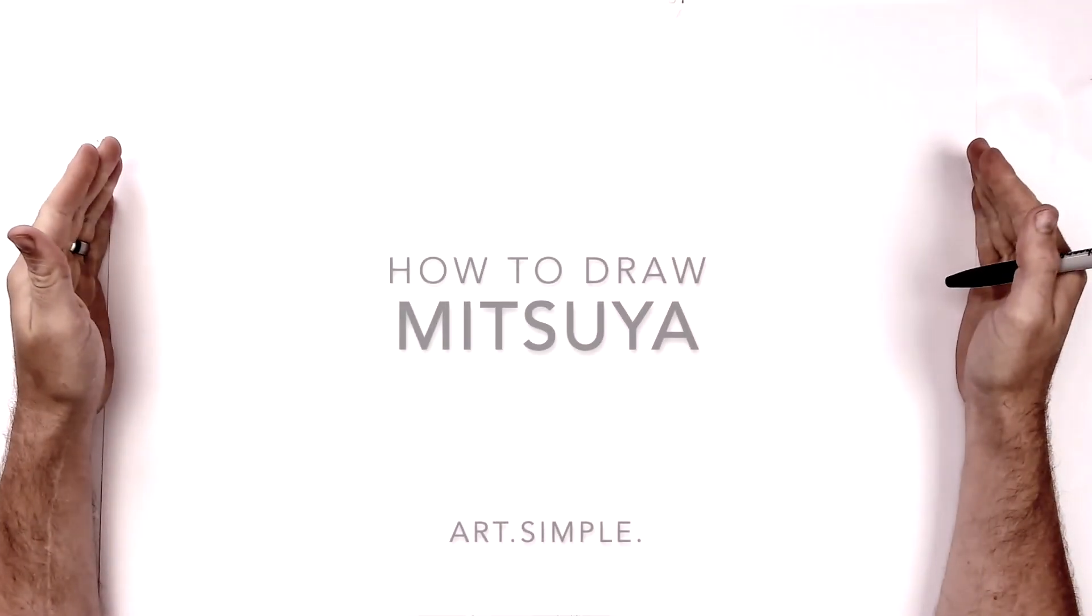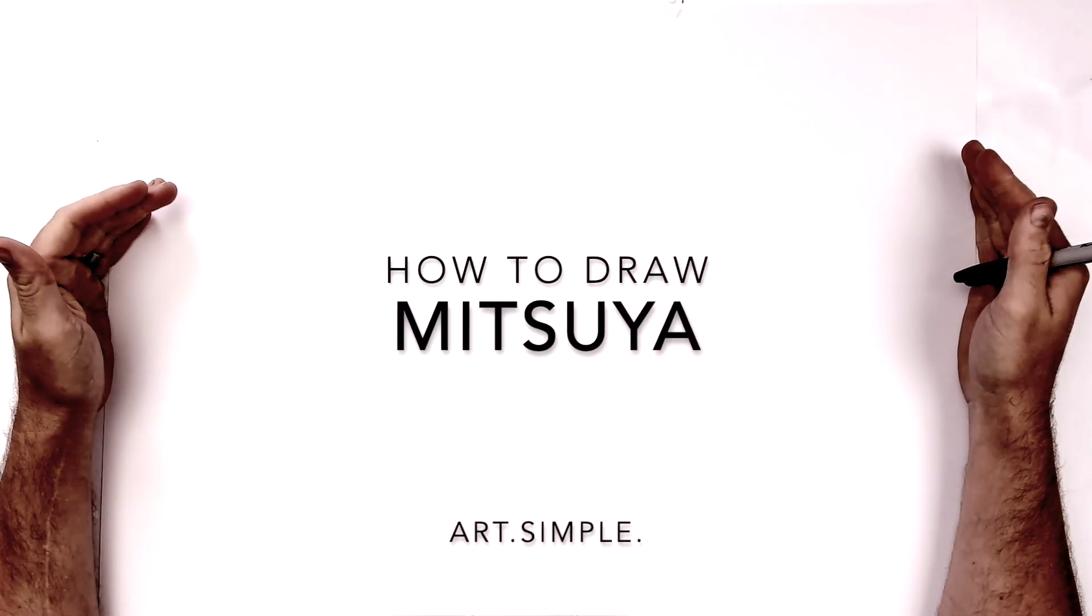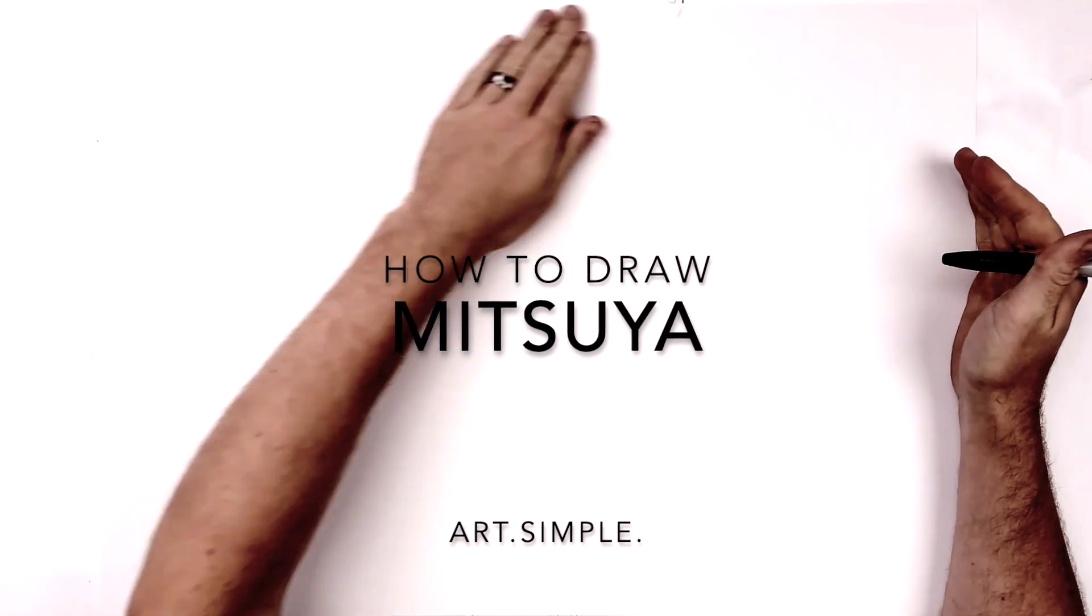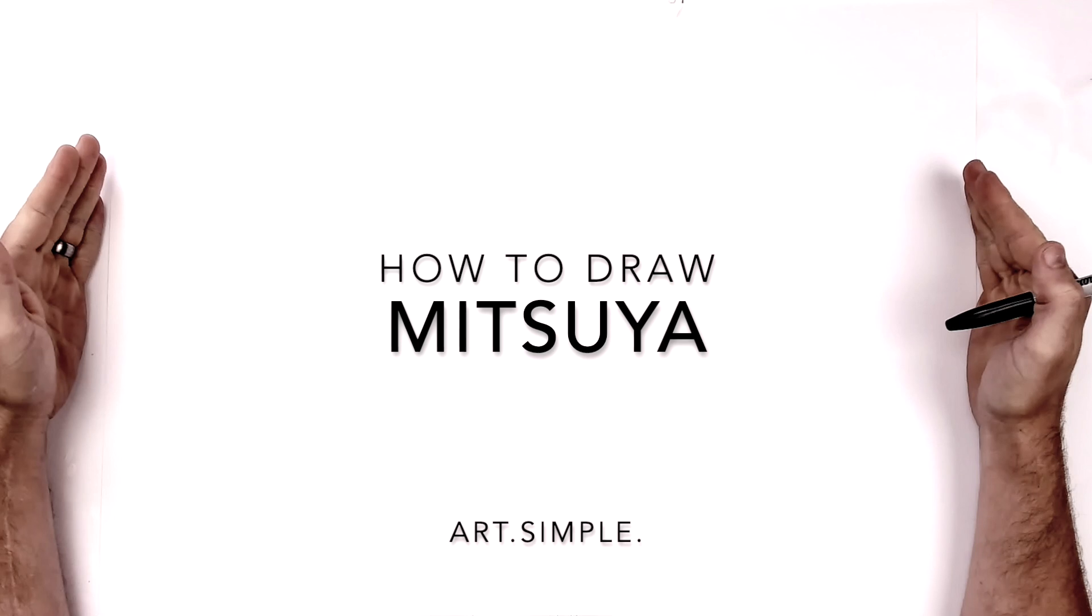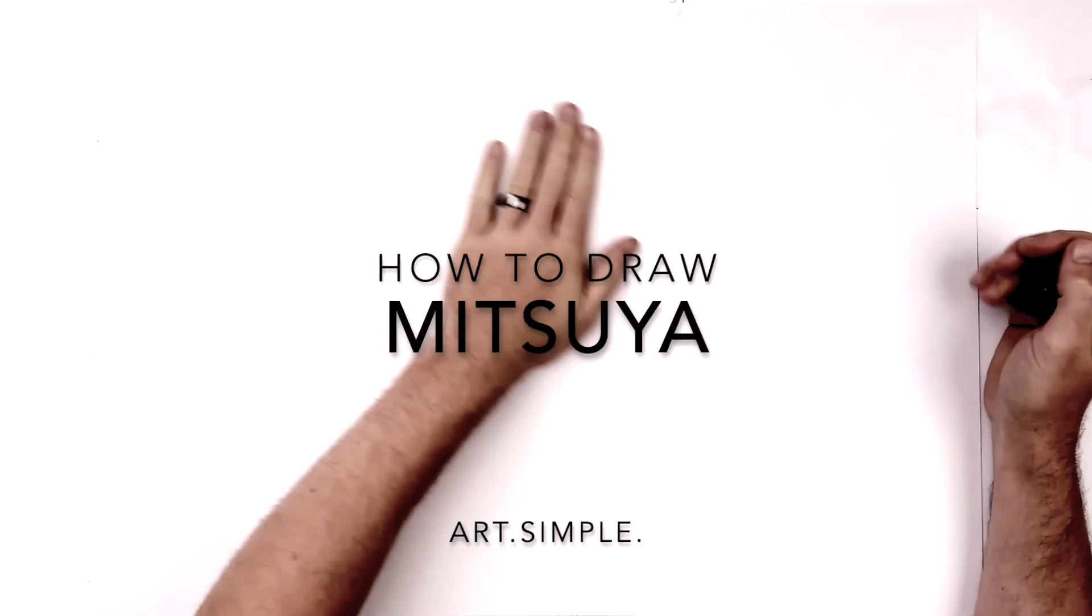Hey everybody, welcome back to another drawing tutorial. So today we're going to be drawing Mitsuya from Tokyo Revengers. I'm on landscape paper. Use a pencil and eraser and hit pause if I go too fast. So let's go.